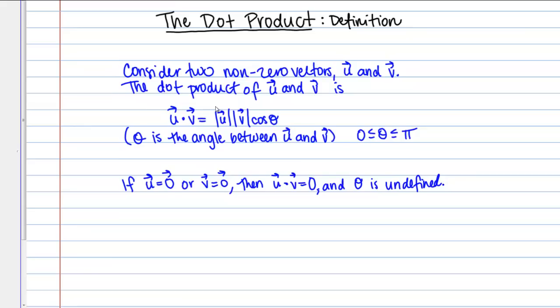It equals the magnitude of u times the magnitude of v times cosine of theta. Here, theta is the angle between vectors u and v. It's an angle between zero and pi radians.